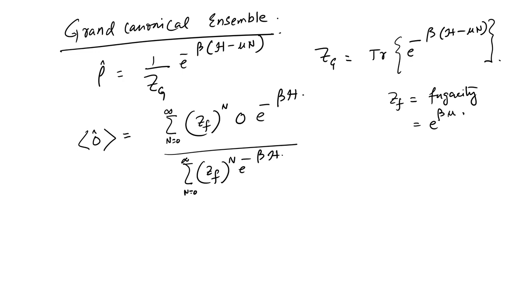This is the important part of the density matrix formalism. It plays the same role as the phase space density in classical mechanics, but with the additional advantage of taking both the statistical ensemble average and the quantum mechanical average together. Let us now do an example.